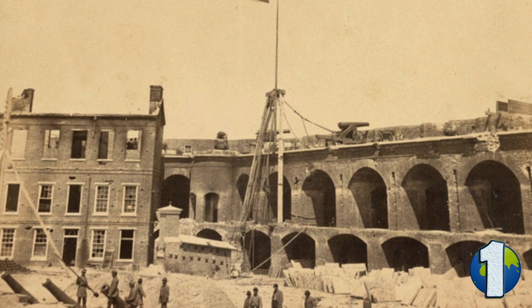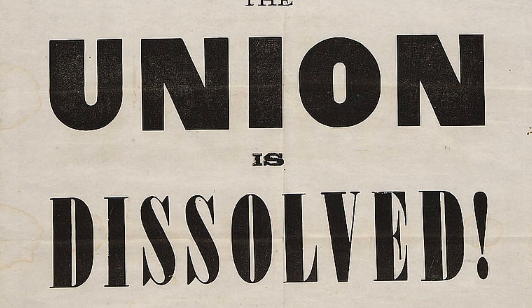On April 12, 1861, Confederate troops attacked and conquered Fort Sumter, a federal property in Charleston, South Carolina. President Abraham Lincoln called on all states to send forces to recapture the fort. The war had just begun.